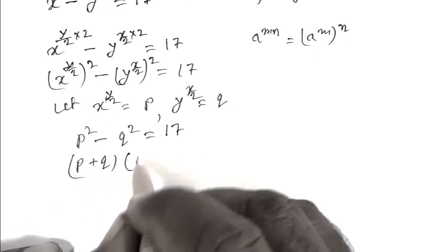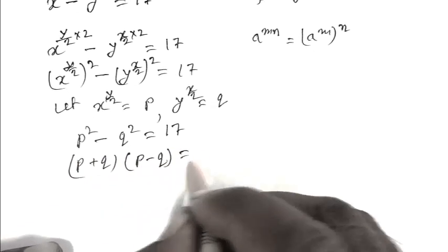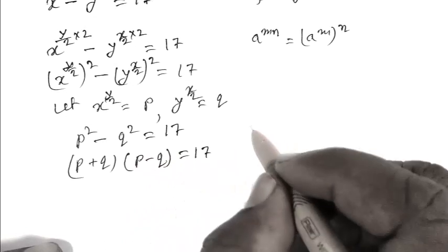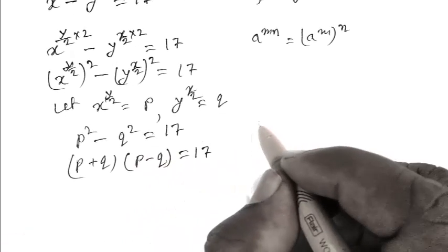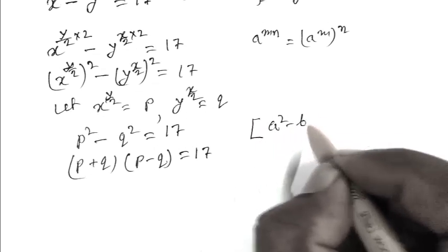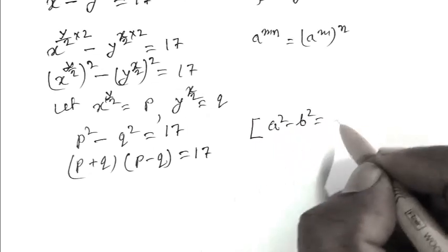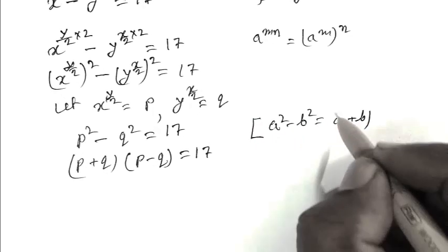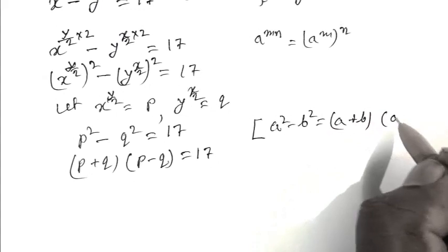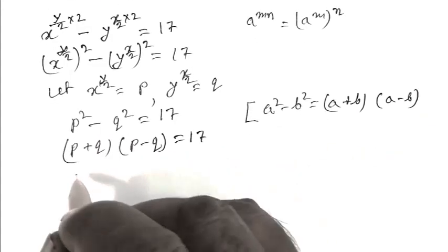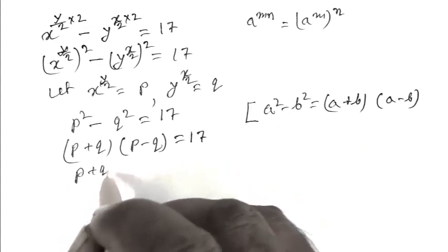We can write p plus q times p minus q equals 17. Here I am applying the formula: a squared minus b squared equals a plus b times a minus b.